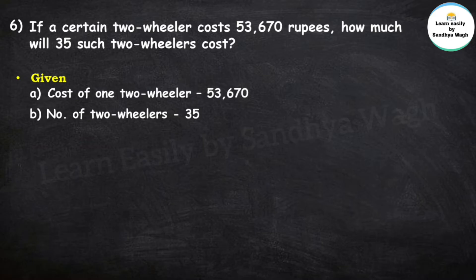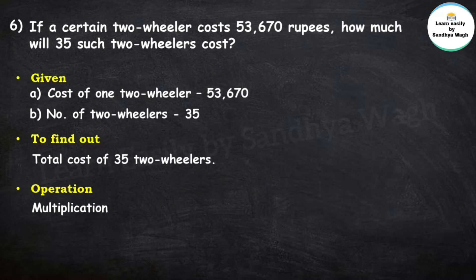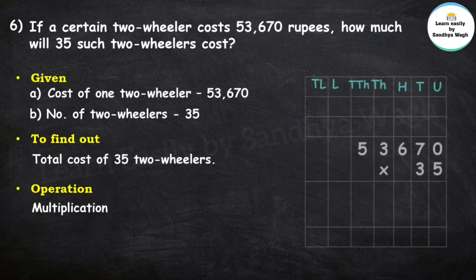Number of two-wheelers given is 35. What do we have to find out? We have to find out the total cost of 35 two-wheelers. For that, we will do multiplication — 53,670 multiplied by 35.